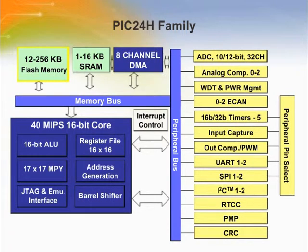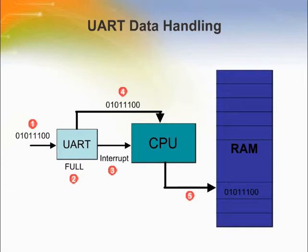The PIC24H family is similar to the PIC24F family. The main difference is a faster core running at 40 MIPS. To help with faster operation, it also has an 8-channel DMA to handle peripheral data. To understand how a DMA helps handle peripheral data, let us look at how a DMA may work with peripherals — for example, with a UART.